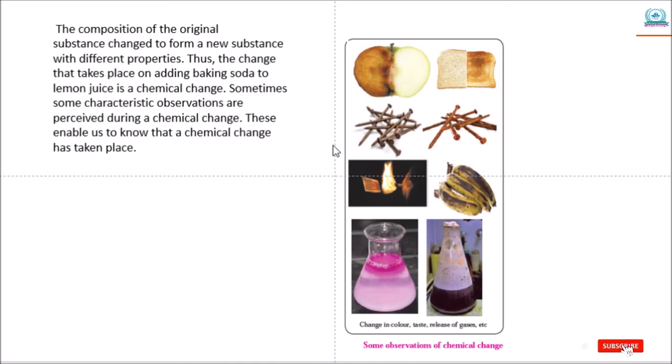Thus, the changes that take place on adding baking soda to lemon juice is a chemical change. Sometimes some characteristic observations are perceived during the chemical change that enable us to know that a chemical change has taken place.